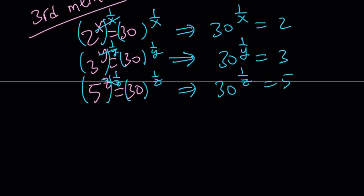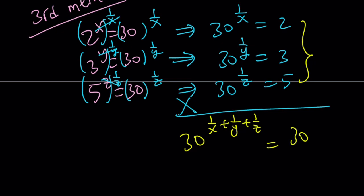And guess what? We're going to multiply these all together. Why? Why not? So let's do it. When you do, you're going to get 30 to the power 1 over x plus 1 over y plus 1 over z equals 2 times 3 times 5, and that is just 30. And notice that 30 to the power something equals 30. That needs to be 1.